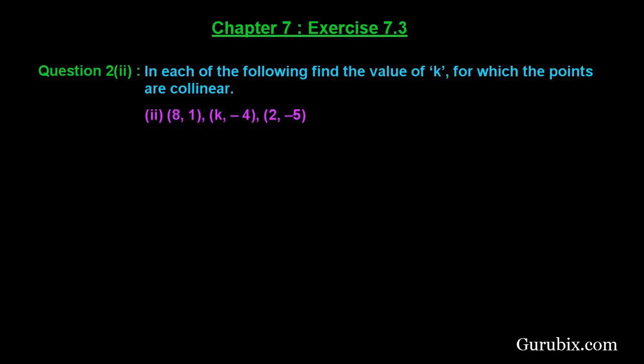Let us solve the second part of question number 2 of exercise 7.3 of chapter 7. The question says: in each of the following, find the value of k for which the points are collinear. Here we shall find the area of the triangle formed by these three points.